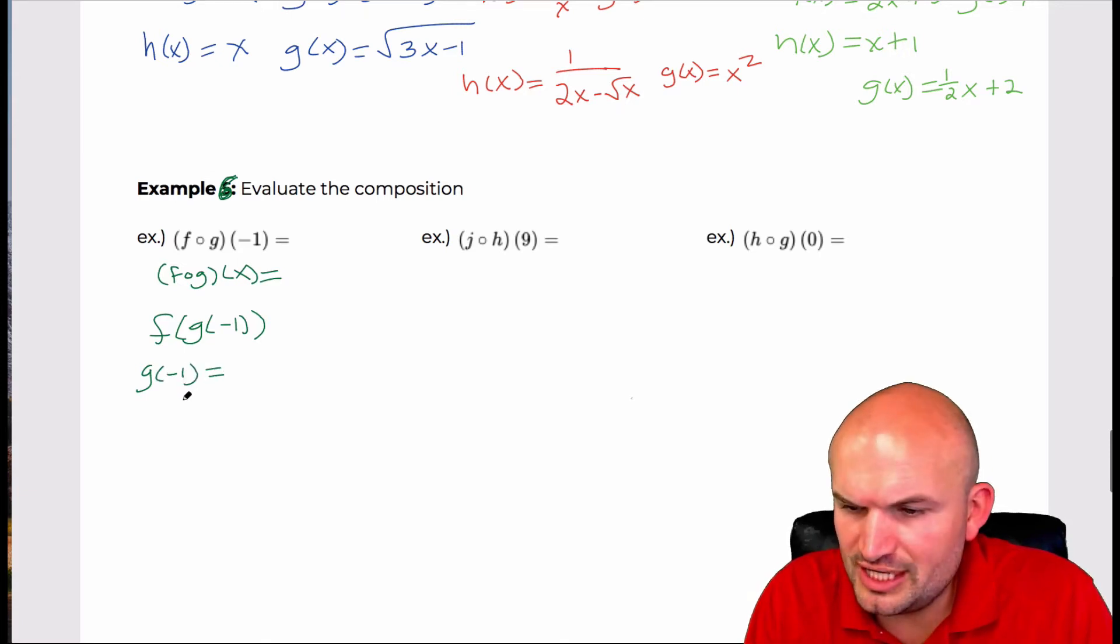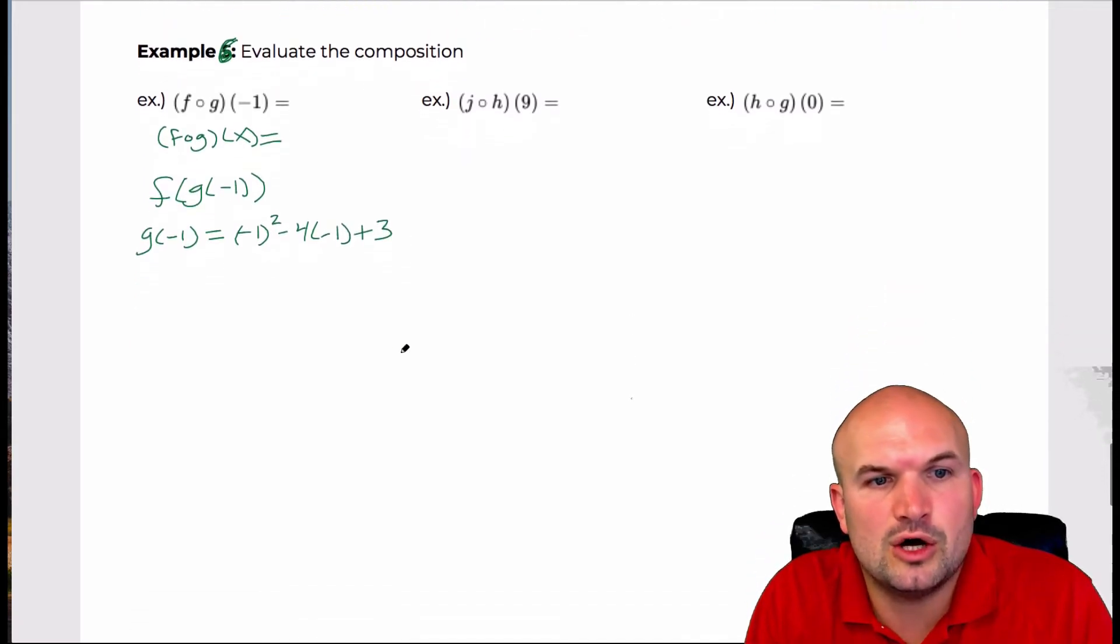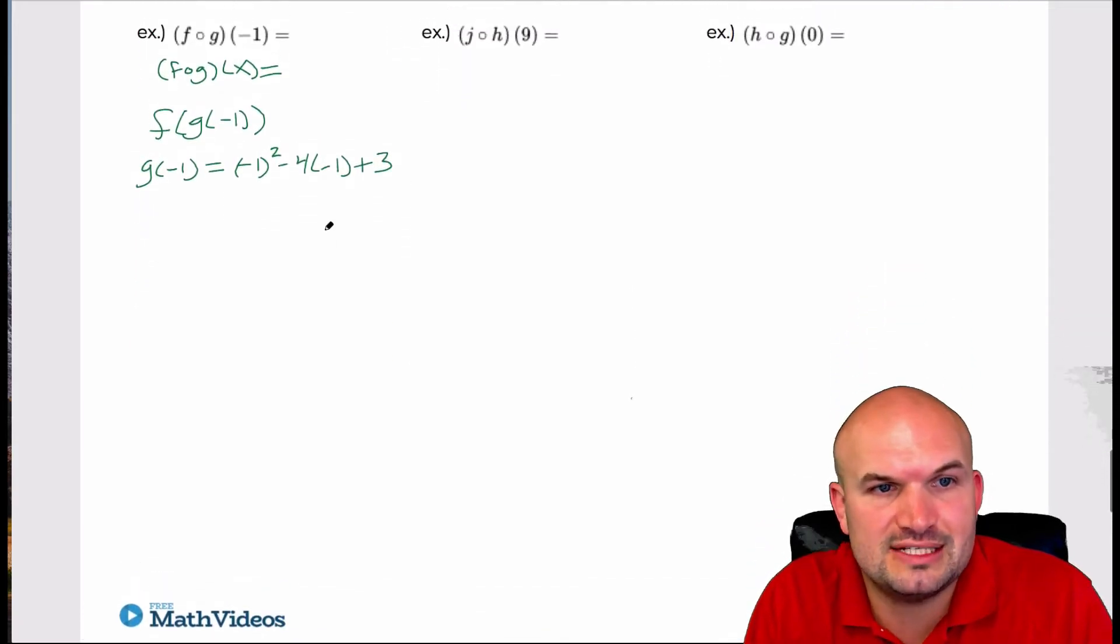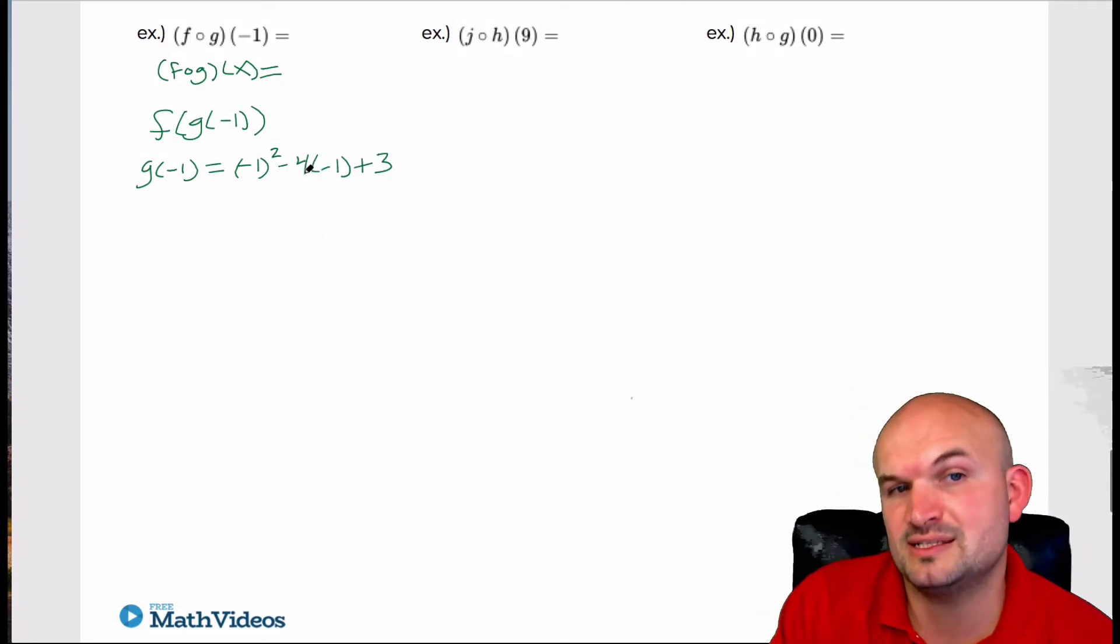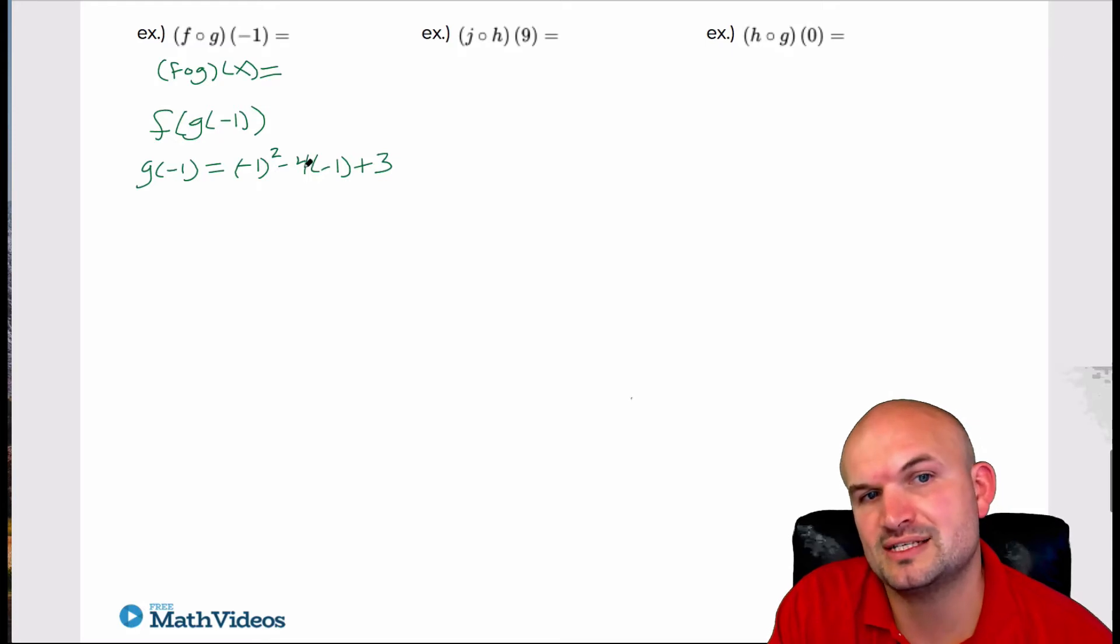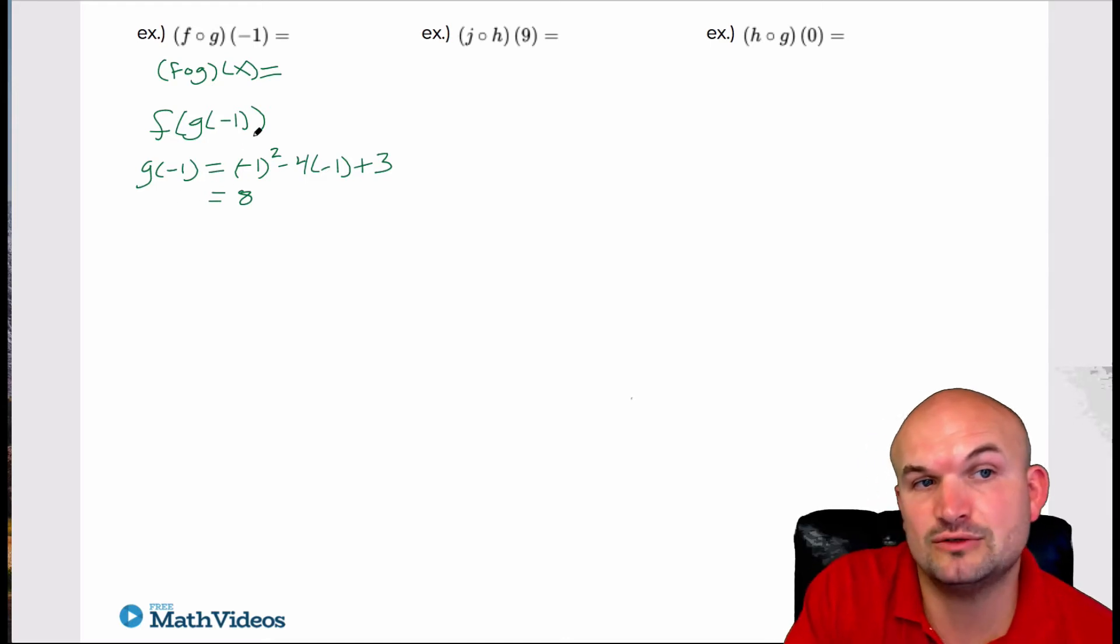So g of negative one, let's remember what g of negative one is, that's going to be negative one squared minus four times negative one plus three. So g of negative one here in this case is going to be one, that's negative four times negative one is positive four. So that's going to be one plus four is five plus three is eight. So g of negative one is equal to eight.